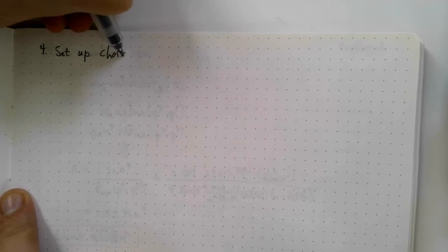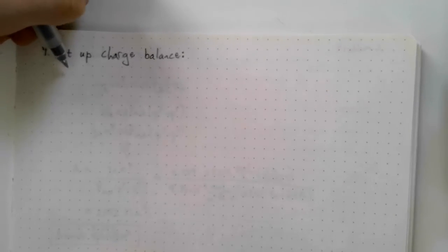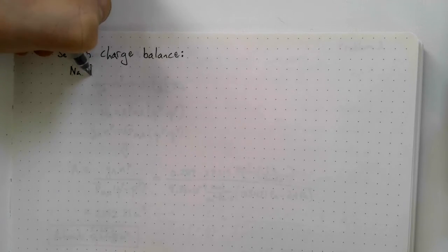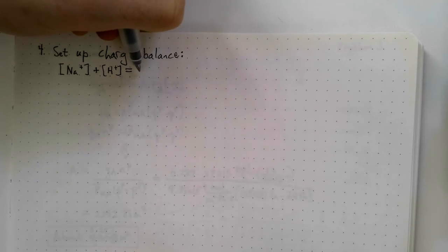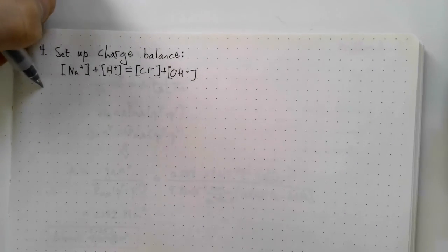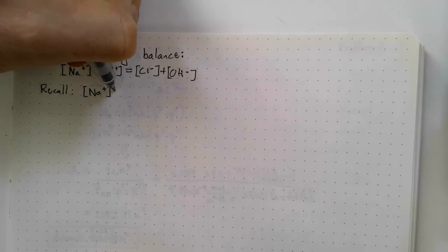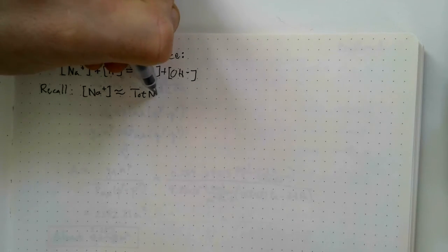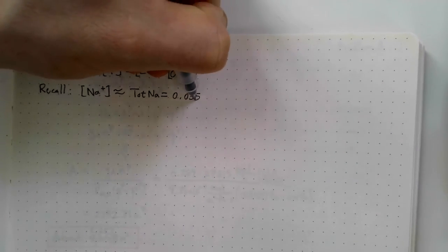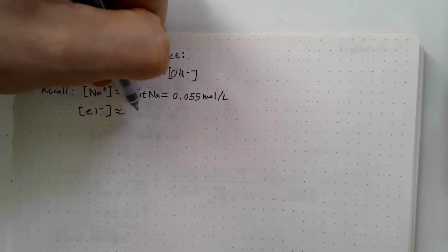And now we're on to the last part of solving this problem, setting up a charge balance. On the left-hand side of the charge balance, I'm going to place all of the cations, which in this case are sodium and hydrogen or proton in solution. On the right side, I'm going to place the anions, in this case chloride and hydroxide. Now, these are all 1 plus ions. If one of them were a 2 plus, for example, calcium 2 plus, they would have a coefficient of 2 out front. Now, just as a reminder, I'm recalling that the sodium ion concentration is approximately equal to the tot Na, which was the amount that we added with 0.055 moles per liter. That's 55 millimoles per liter.